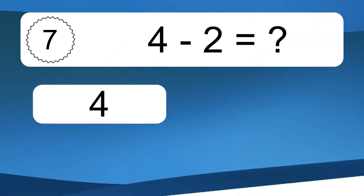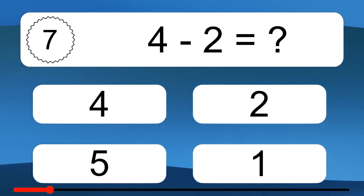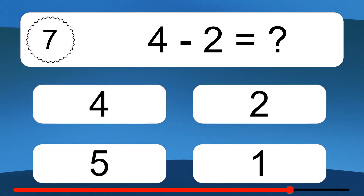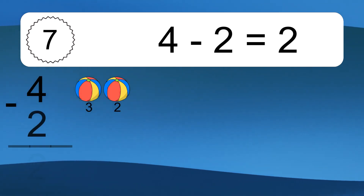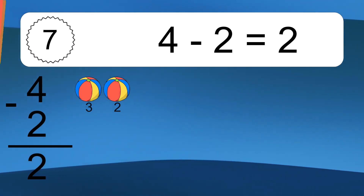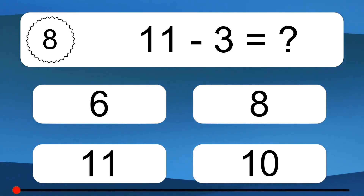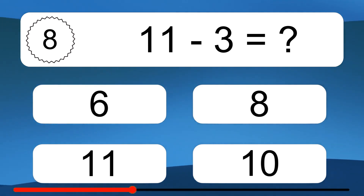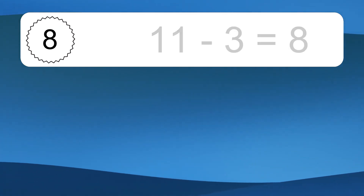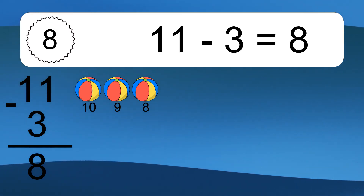4 minus 2 equals what? 4 minus 2 equals 2. Let's count it: 3, 2. 11 minus 3 equals what? 11 minus 3 equals 8. Let's count it: 10, 9, 8.